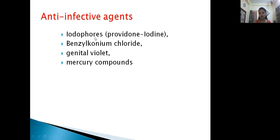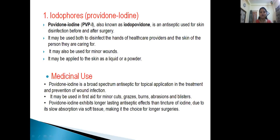First we will begin with Iodophore. In the exam it is called Iodophore, but it is also called Povidone Iodine. Povidone Iodine, also known as Iodopividone, is an antiseptic. It is used in cases of pus formation, tincture or injury. It is used for skin disinfection before and after surgery, similar to Boroline, which is also an antiseptic.